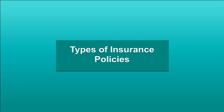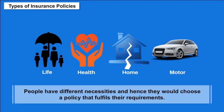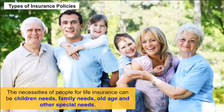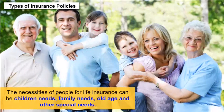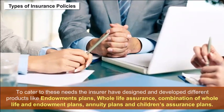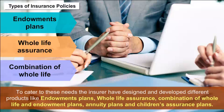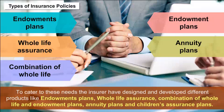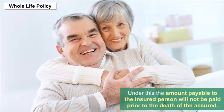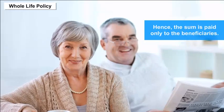Types of Insurance Policies: People have different necessities and hence would choose a policy that fulfills their requirements — such as children's needs, family needs, old age, and other special needs. To cater to these needs, insurers have designed products like endowment plans, whole life assurance, combination plans, annuity plans, and children's assurance plans. Whole life policy: the amount payable will not be paid prior to the death of the assured; the sum is paid only to the beneficiaries.